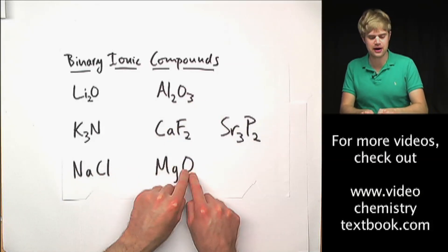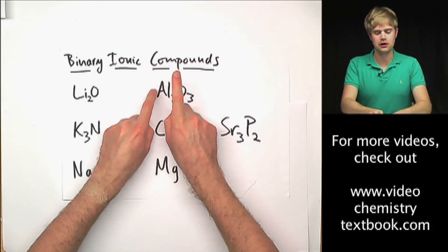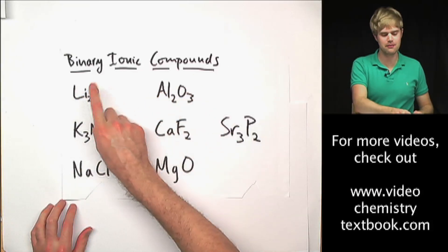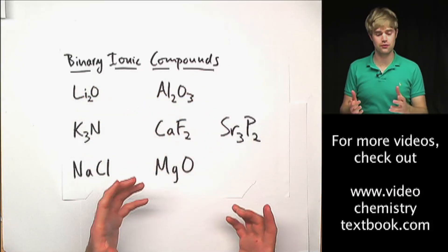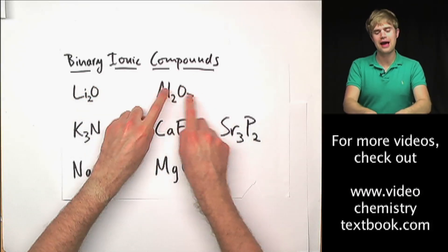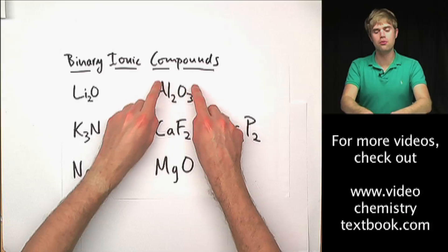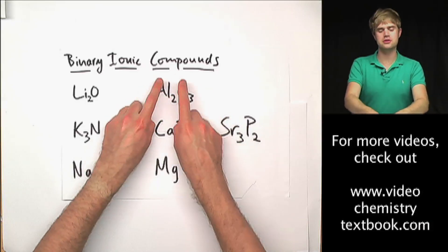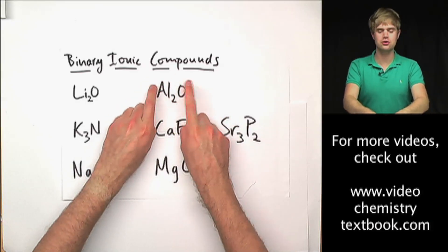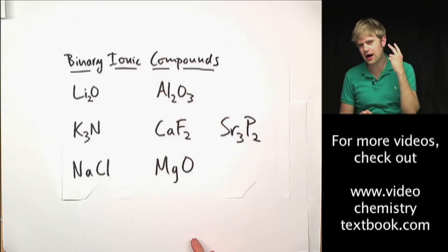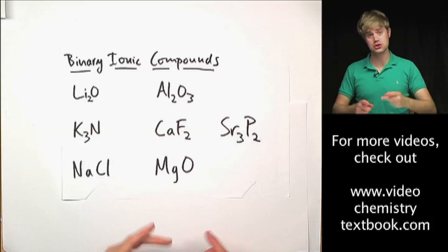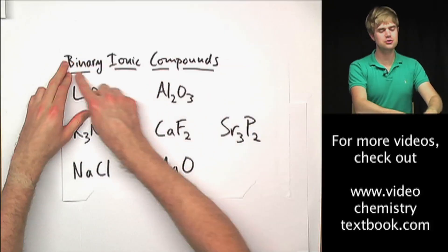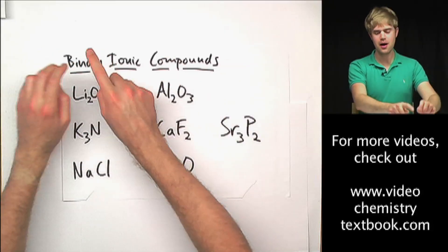Sodium chloride, magnesium oxide, aluminum and oxygen, lithium and oxygen, and so forth. We might have more than two actual atoms in something like Li₂O₃, but there are only two types of atoms — two elements in each of these. So that's why we call them binary.